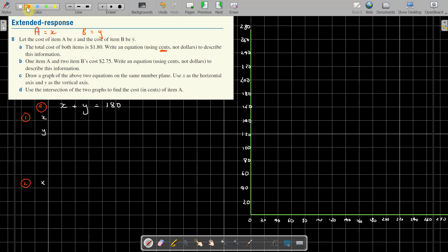Then part B: it says one of item A, so that's X, and two item Bs, so 2Y, equals... cents not dollars, $2.75, that's 275 cents. Yep, that's the equation of that one. So equation one, equation two.